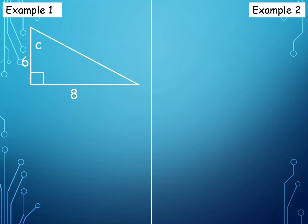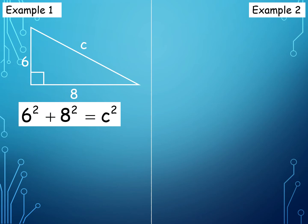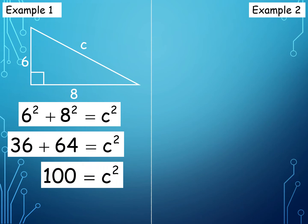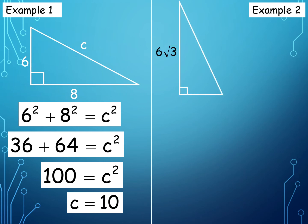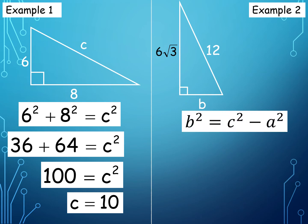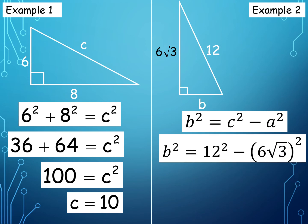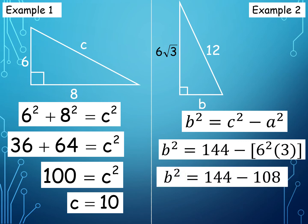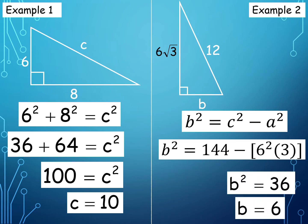Now let us have other examples. We use 6 squared plus 8 squared is equal to C squared: 36 plus 64 equals 100, and the square root of 100 is 10. How about if one of the legs contains a radical sign? We use the formula B squared is equal to C squared minus A squared. Substituting: 12 squared minus (6√3) squared. 12 squared is 144. For (6√3) squared, we cancel the square root sign so it becomes 36 times 3, which equals 108. So 144 minus 108 equals 36, and the square root of 36 is 6.